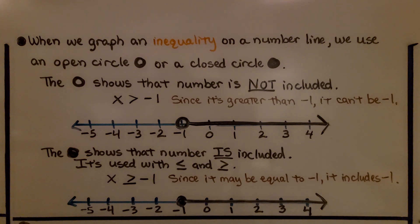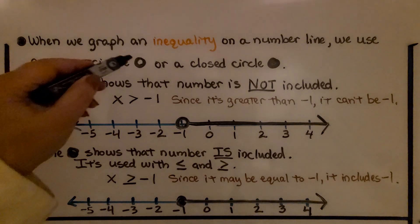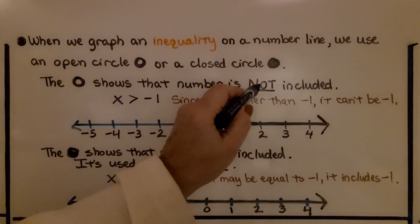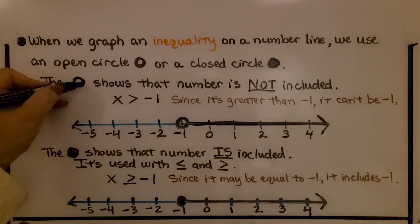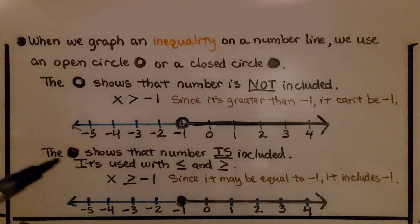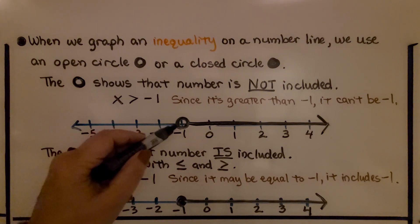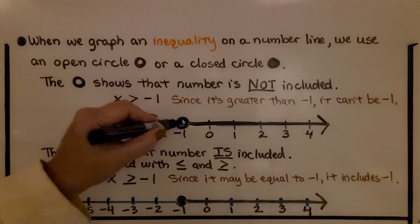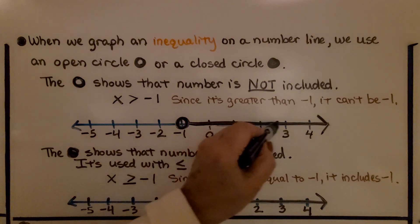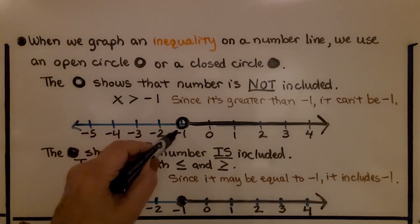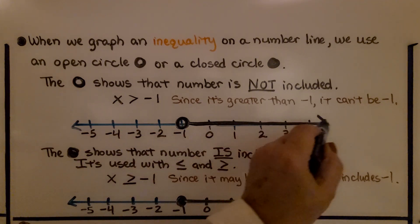When we graph an inequality on a number line, we use an open circle or a closed circle. The open circle shows that the number is not included — think of it as the O in 'not.' So if we have x is greater than negative 1, since it's greater than negative 1, it can't be negative 1 — it's not included. We use an open circle at negative 1, and our arrow points to the right because it represents any number greater than negative 1.